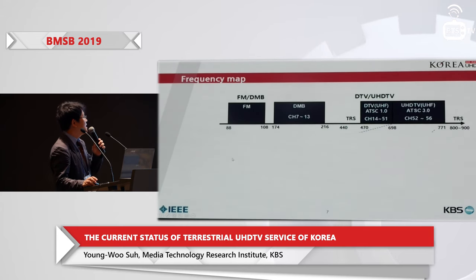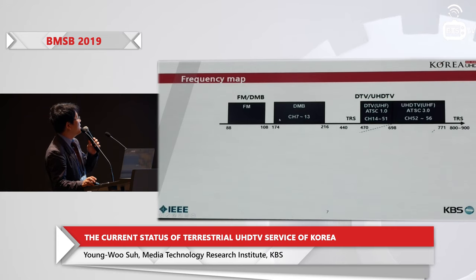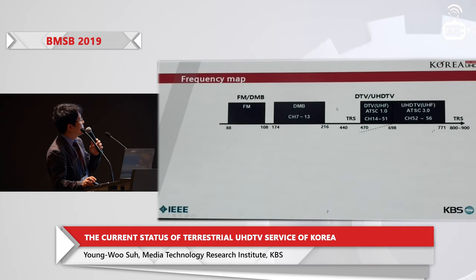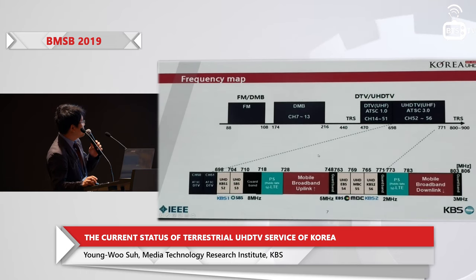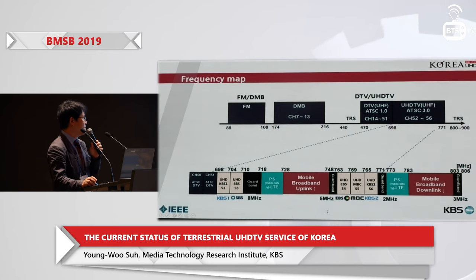So we go to the first phase. This is the frequency map of Korea. At the end, the TV and DTV is in the VHF band. UHD is on more than 700 MHz. This is the 700 MHz band — there is UHD. We have three major broadcasters: KBS, SBS, and MBC.